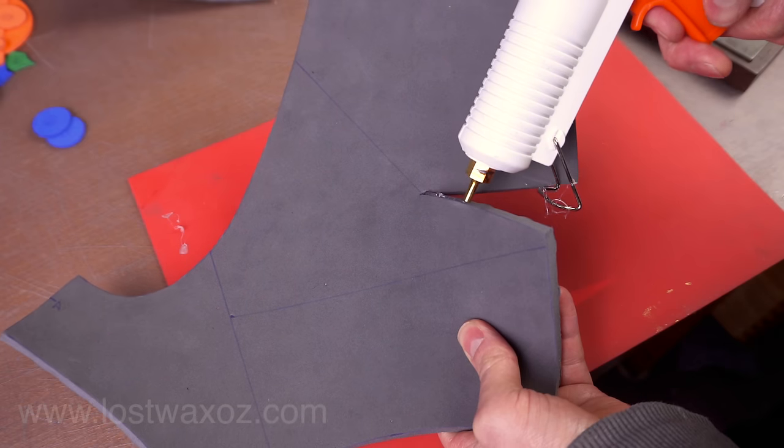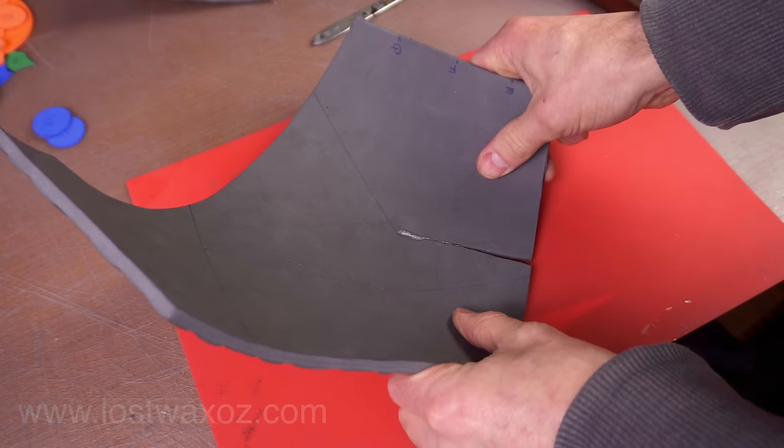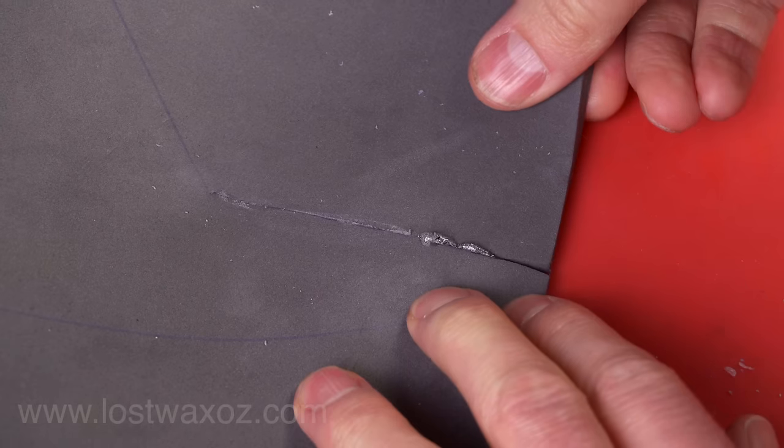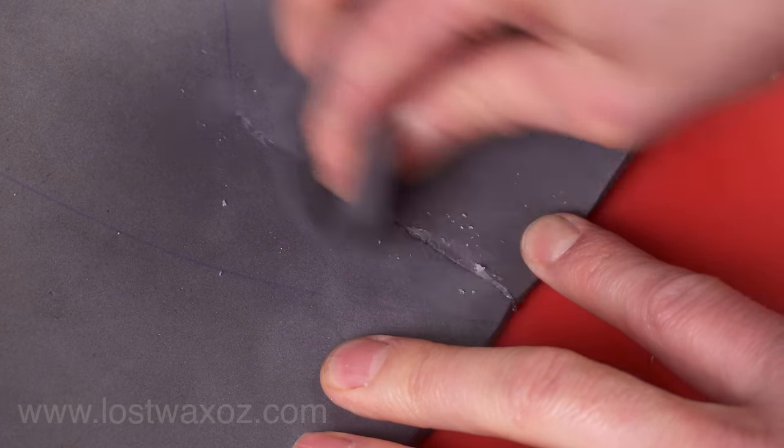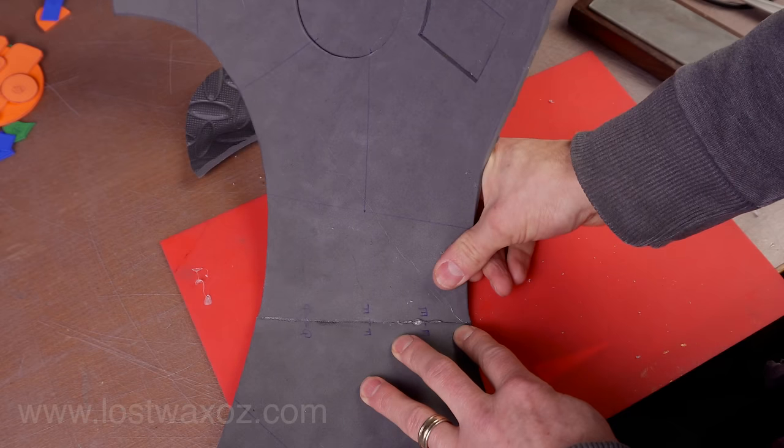Now glue the dart on piece number two, gluing about five centimeters at a time. Hold the edges together until the glue cools while pressing down against a table. If you're new to using hot glue and foam, I have a video with tips on how to get nice smooth seams and the link will be in the top right corner. Glue piece one and two together lining up alignment points E, F and G.